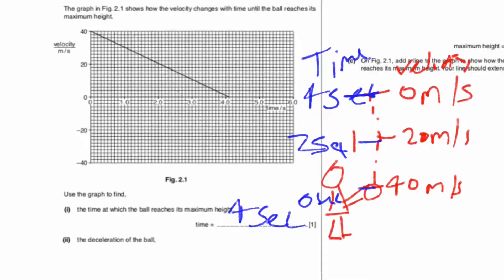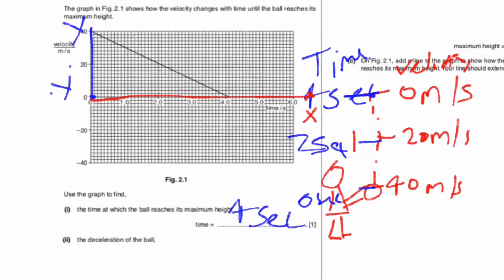In order to find the deceleration of the ball, we need four parameters from the graph. On the x-axis and y-axis, we find y1, y2, x1, and x2. Both y1 and x1 start at 0, so the initial values are both 0.